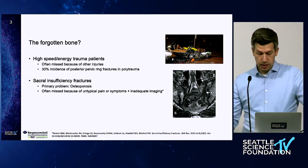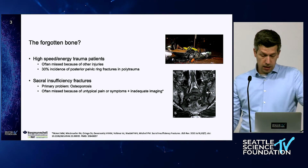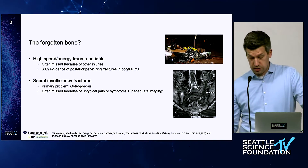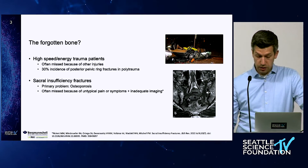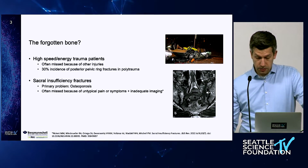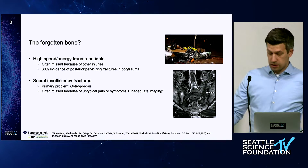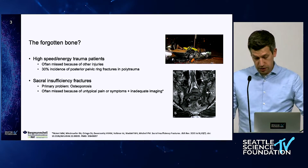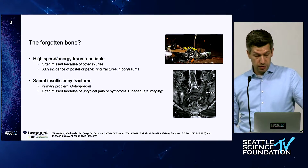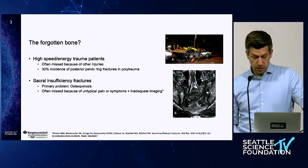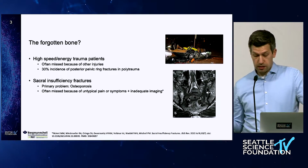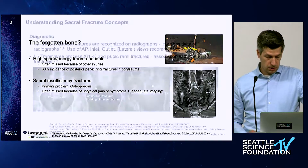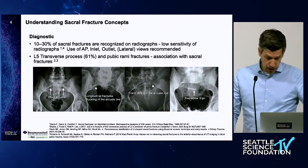Looking at sacral fractures, we basically look at two different entities. The first is high-speed or high-energy trauma patients, with a reported incidence of around 30% of posterior pelvic ring fractures in polytrauma patients — but these fractures are often missed due to polytrauma-related injuries. The second entity is sacral insufficiency fractures, primarily driven by osteoporosis, therefore often seen in women over 55, and these are frequently missed due to atypical symptoms.